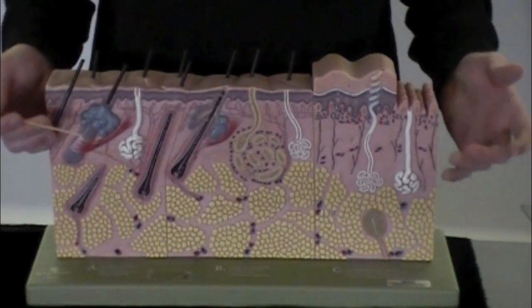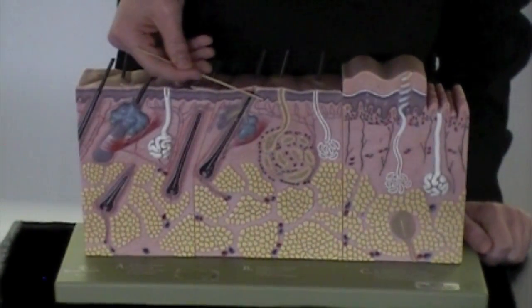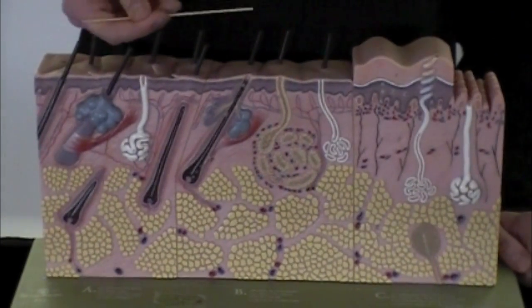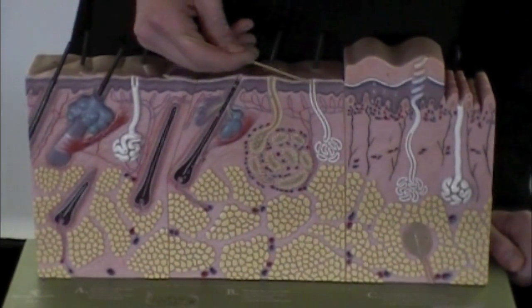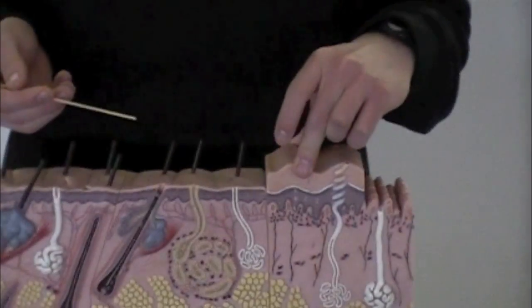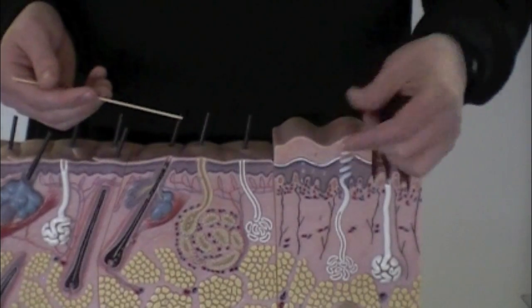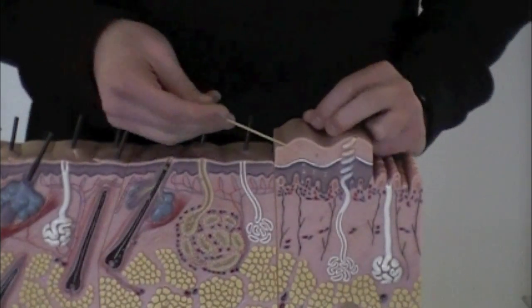We're going to be going over this model of the skin here, a few layers of the skin. Starting off, this purple layer on up is going to be epidermis. This little block right here is showing like on a heel, you have callus skin where it's built up and got a little bit thicker. So that's going to be a callus, so this would include epidermis, and so will that purple layer.